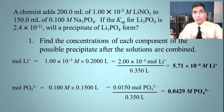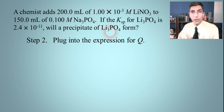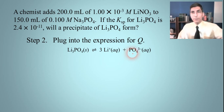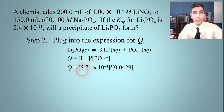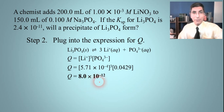Next, we plug these numbers into the expression for Q. We write out the dissociation of lithium phosphate — it must be balanced: lithium phosphate yields three lithium ions and one phosphate ion. So Q equals lithium ion concentration cubed times phosphate ion concentration, with the solid omitted. Plugging in: Q equals (5.71 times 10 to the negative fourth)³ times 0.0429. When you calculate this, Q equals approximately 8.0 times 10 to the negative 12th.